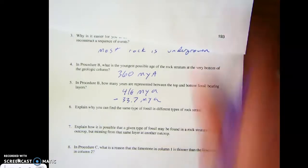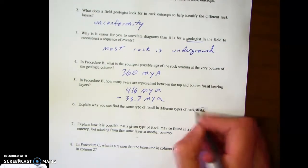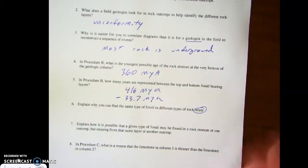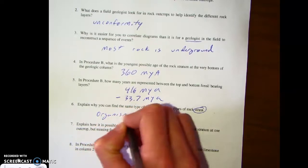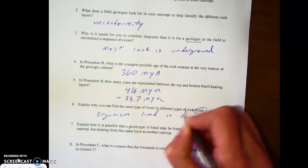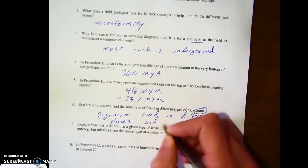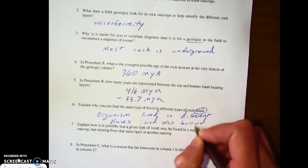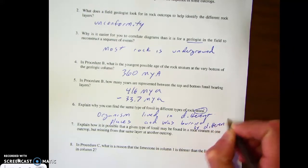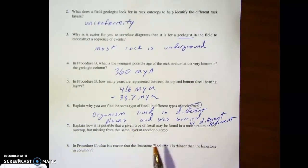For number six, it says explain why you can find the same type of fossil in different types of rock strata. Well, strata just means layers. We can find the same fossil in different types of rocks because the organism lived in different places and was buried by different sediments. The type of sedimentary rock the fossil is found in just depends on what type of sediment was deposited and really has nothing to do with the creature itself.